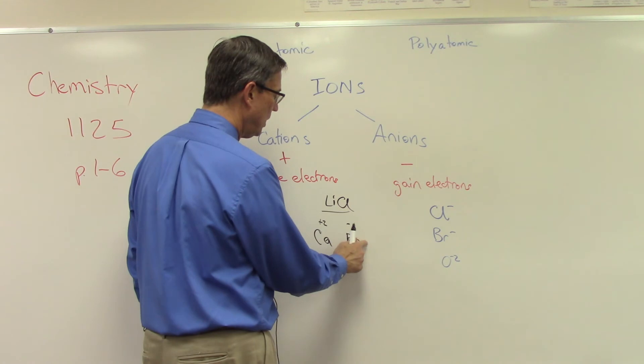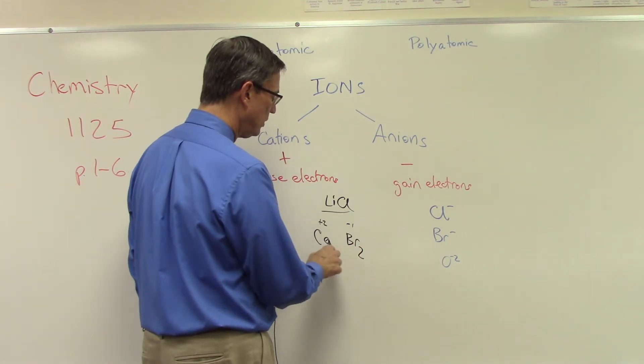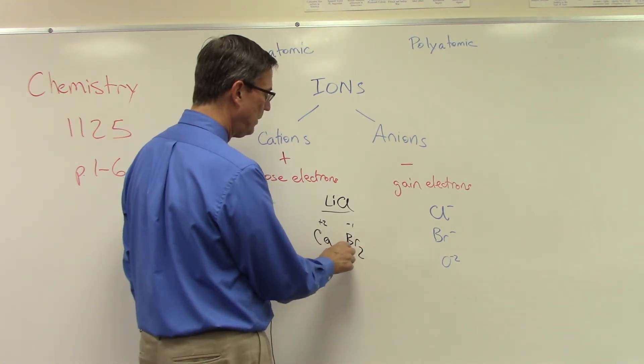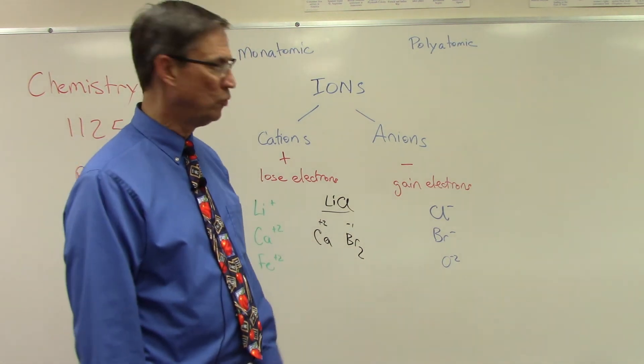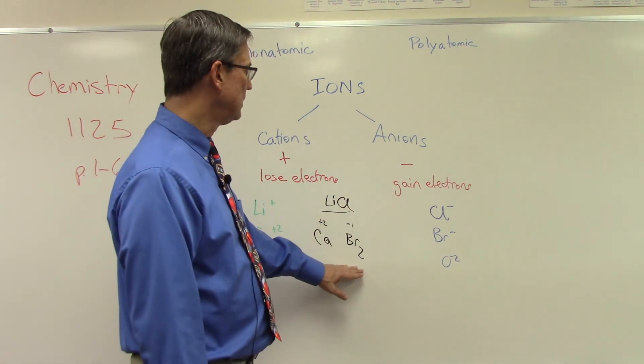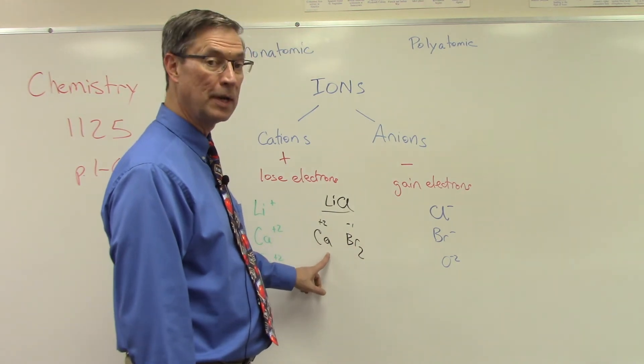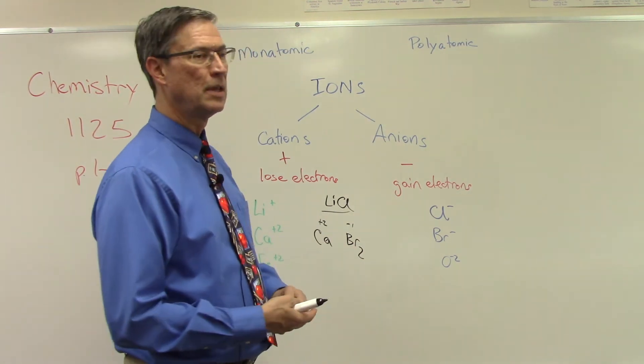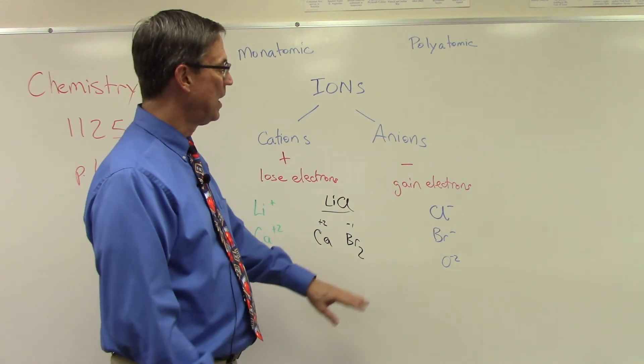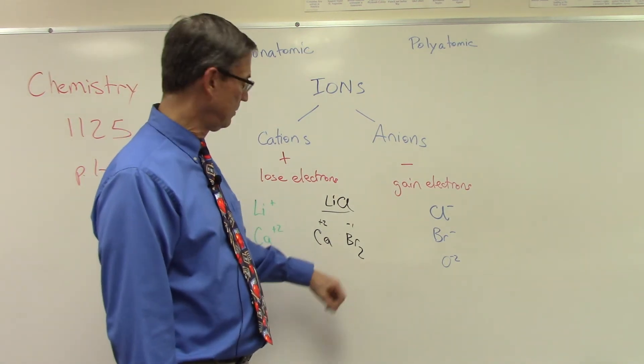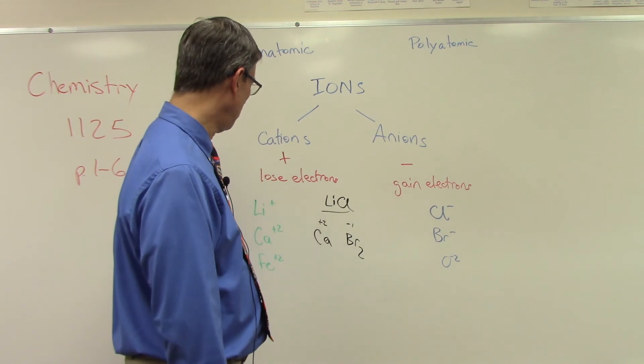All right, so putting the two together I would have calcium and then Br with a subscript of two. And so that means two, two atoms of bromine, bond with one calcium in that ratio, that recipe if you want to call it that. And the name would be calcium bromide. Does that make sense? Calcium bromide.